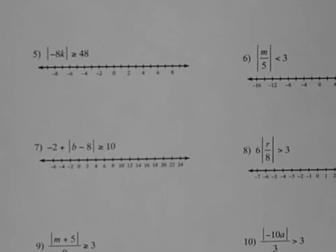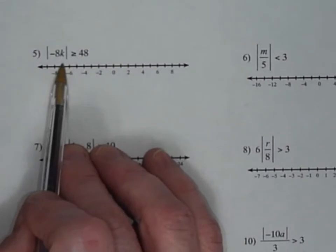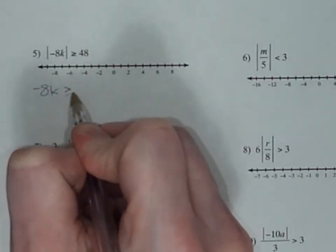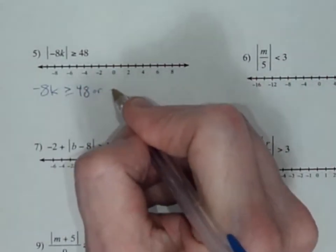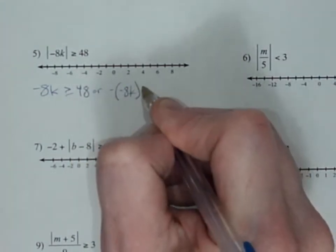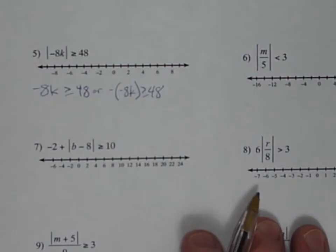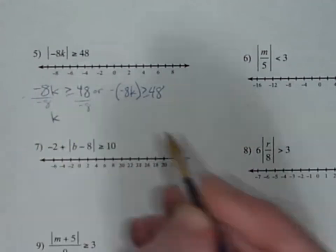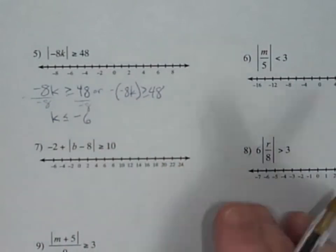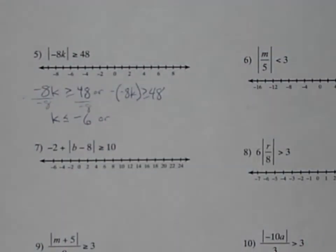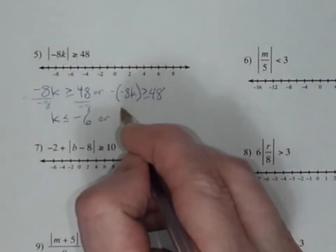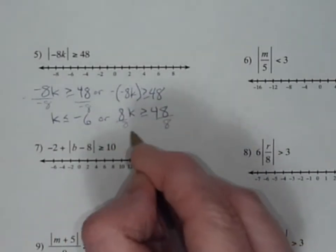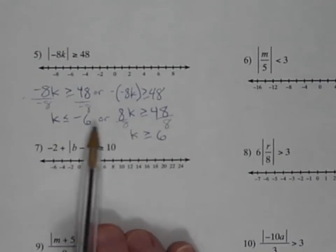Okay, if we look at number 5 — a little more complex because it's inside the inequality. So we just rewrite it. It's a greater than, so it's going to be an or — a union. So negative 8k is greater than or equal to 48, or the negative of that is greater than or equal to 48. To solve these: divide by negative 8, and k — with the flipped inequality — is less than or equal to negative 6. Or, since negative times negative is positive, that's positive 8k greater than or equal to 48, and divide both sides by 8: k is greater than or equal to 6.